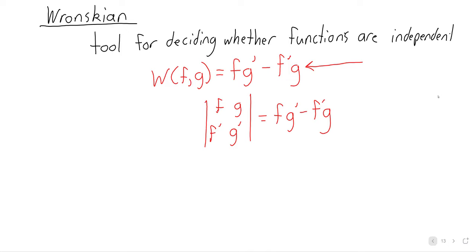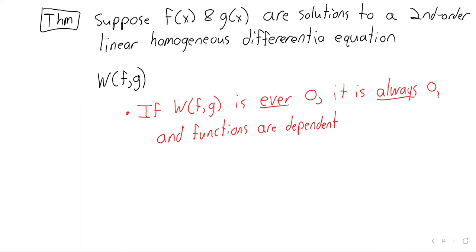The columns of this matrix are corresponding to the functions f and g, and if the determinant is zero, then the functions are dependent. The only difference between this and linear algebra is the Wronskian is not a number, the determinant's a number, the Wronskian's a function.